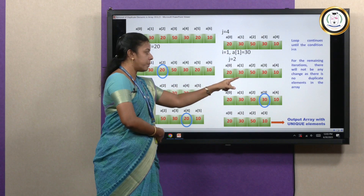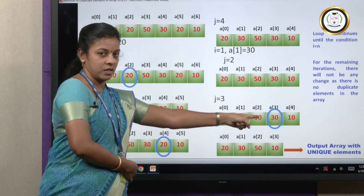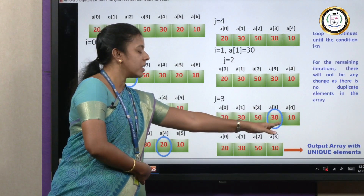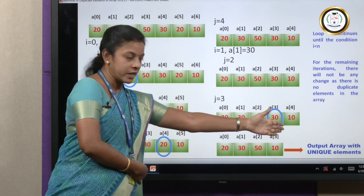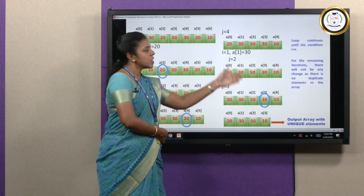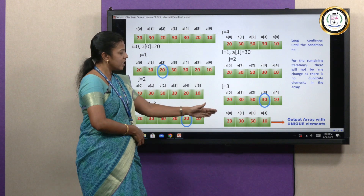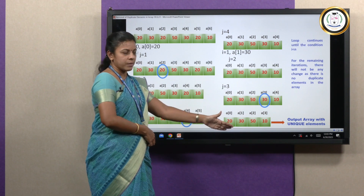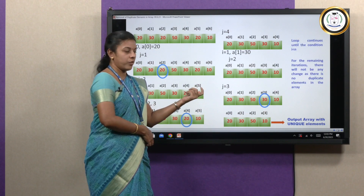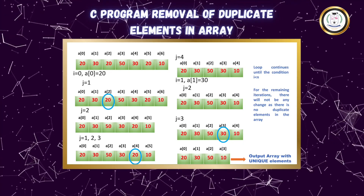When comparing 30 with elements to its right, we encounter another duplicate — 30 in a[3]. That element is removed and the element in the fourth location is shifted left. Now the output is 20, 30, 50, 10. This loop continues until the condition i less than n is met. Since there are no more duplicate elements, there will be no further change, and the final unique elements are 20, 30, 50, 10.